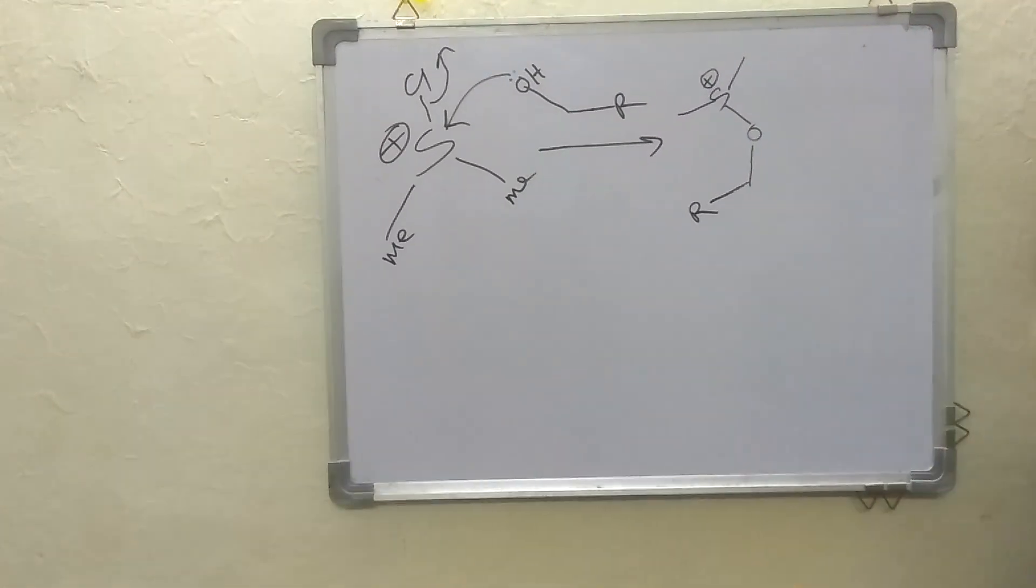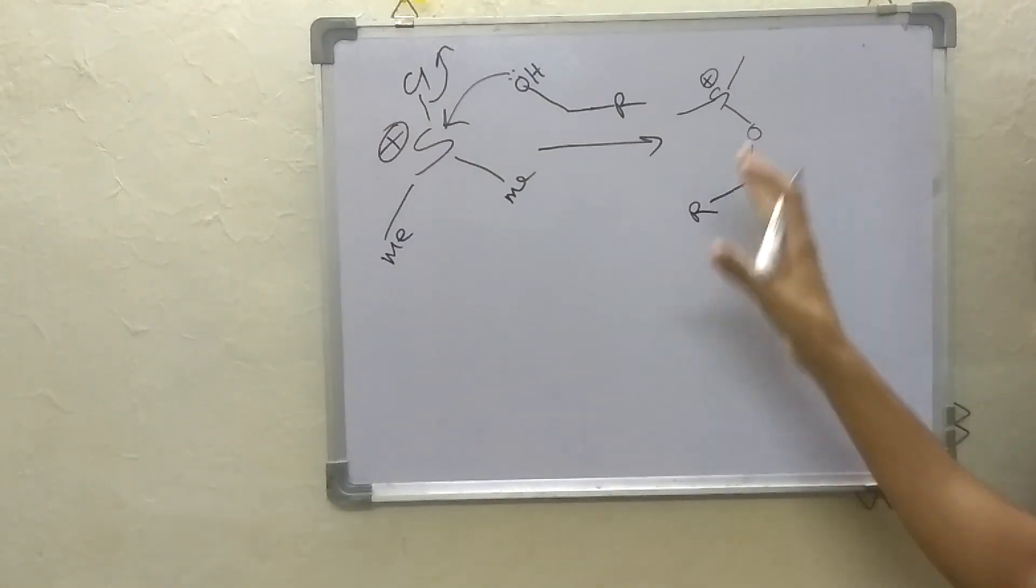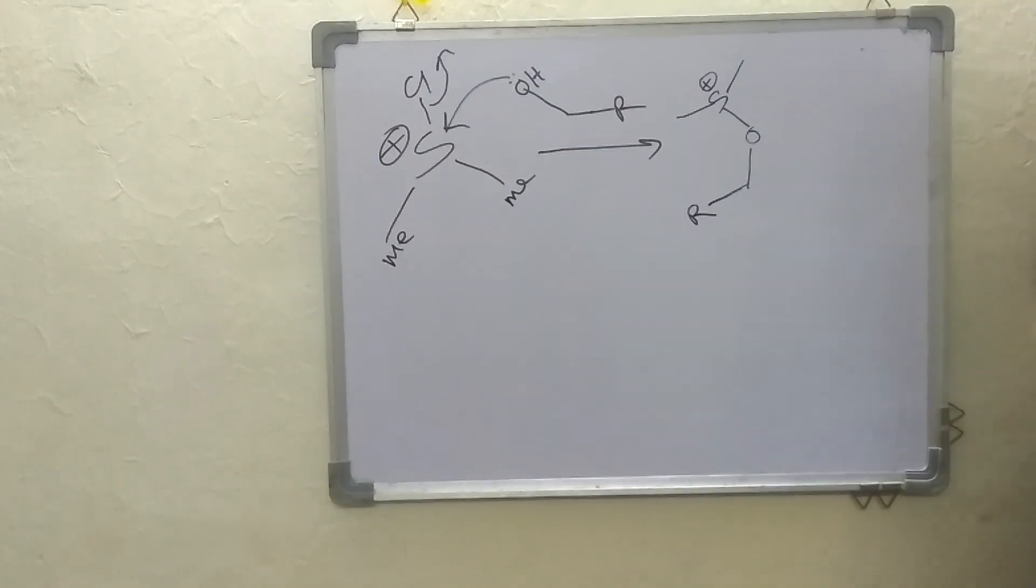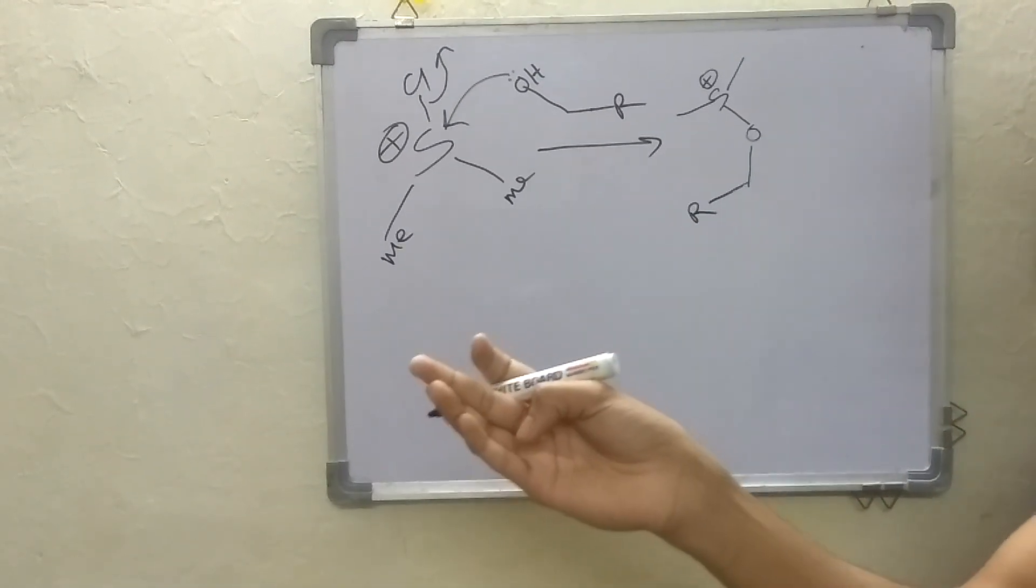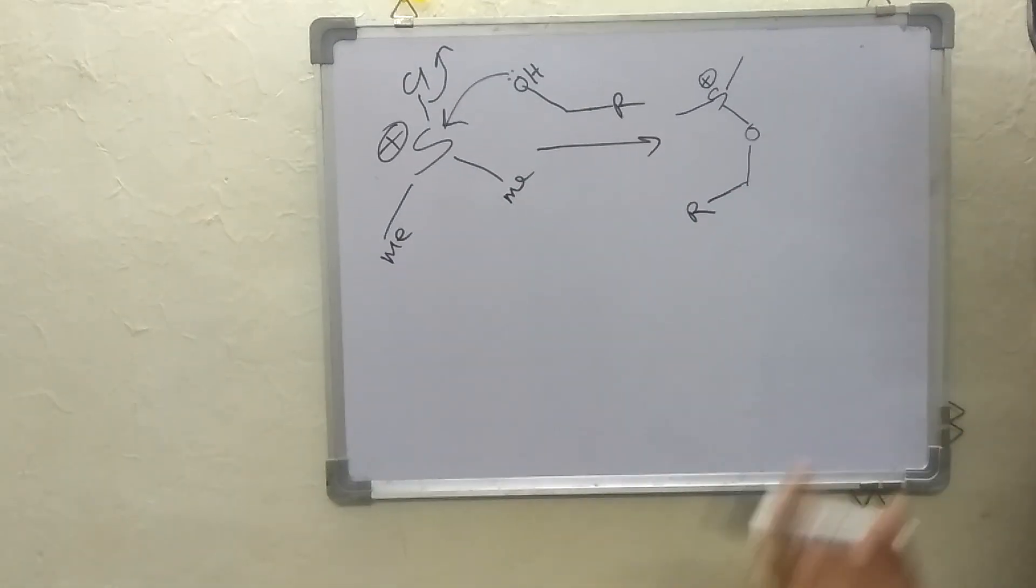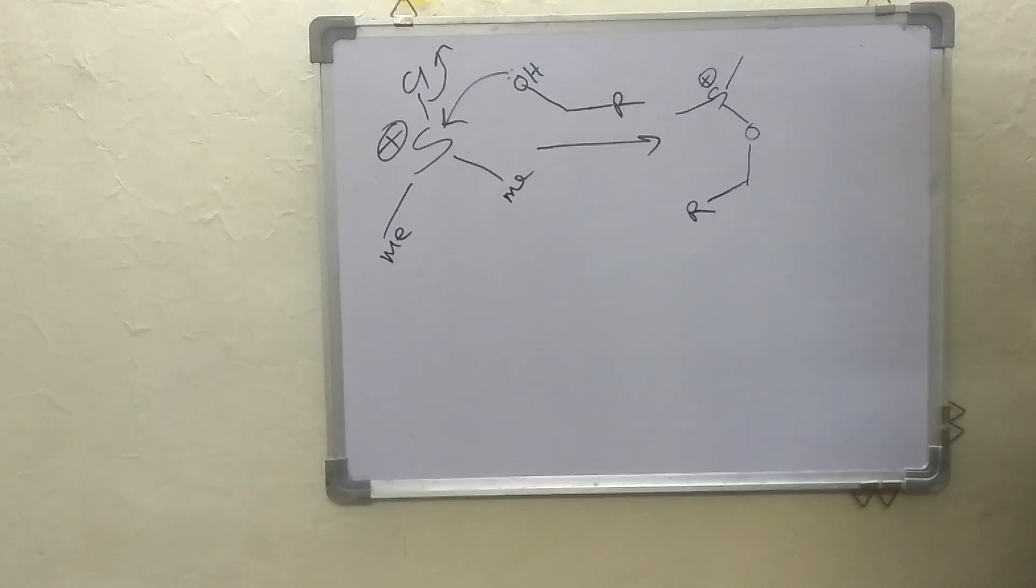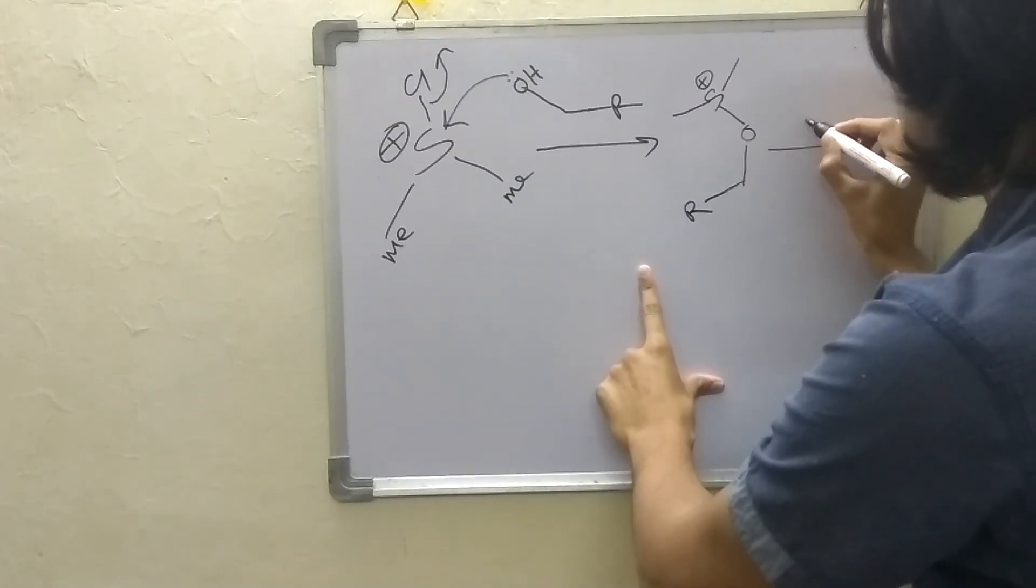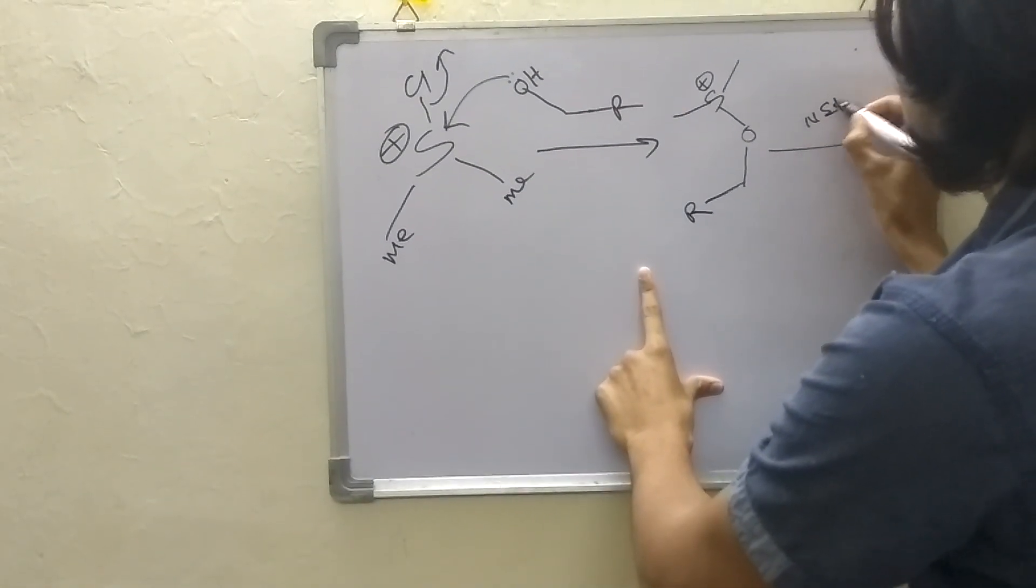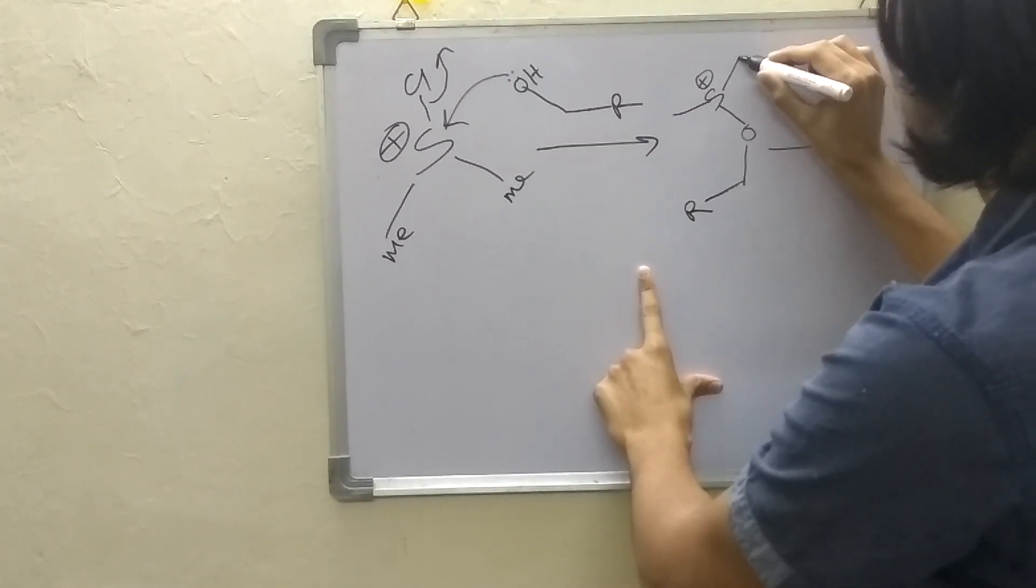This will be generated. Now generation of this intermediate takes time so this is why we have to keep the reaction for one hour before adding the triethylamine. Now at minus 78 degrees centigrade if we add triethylamine what will happen.